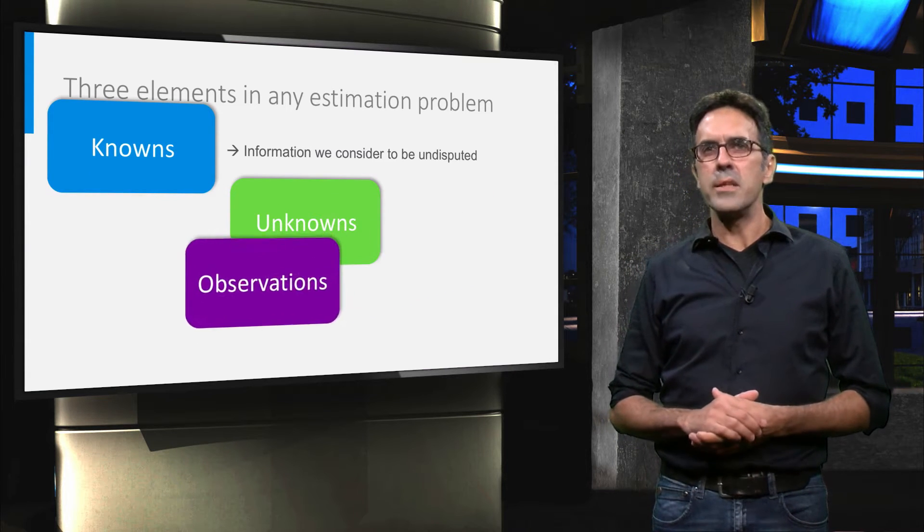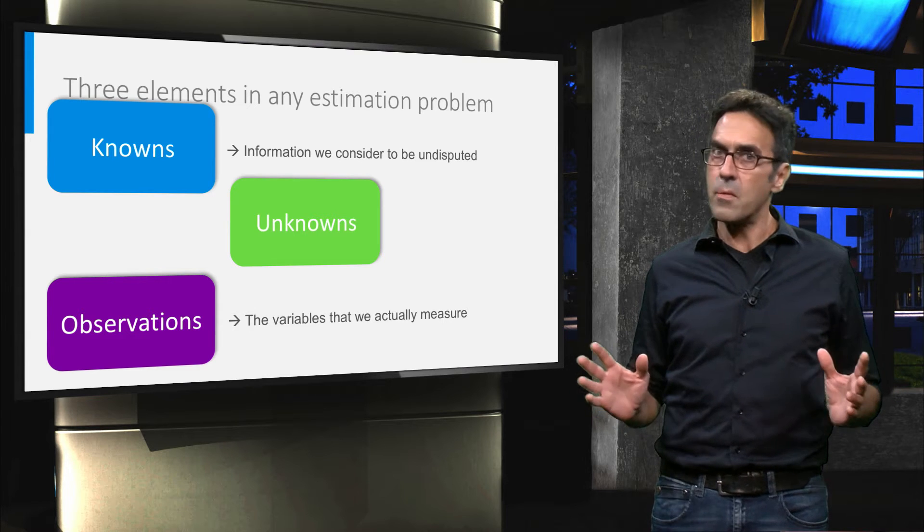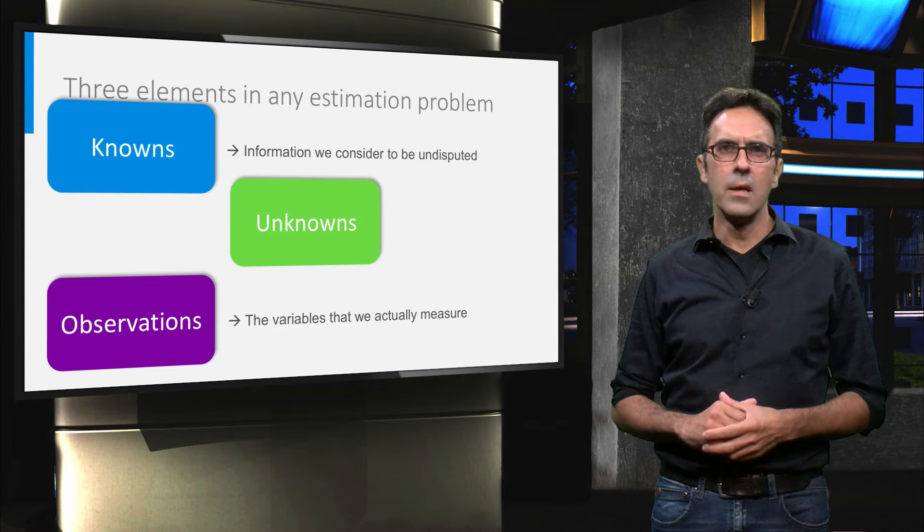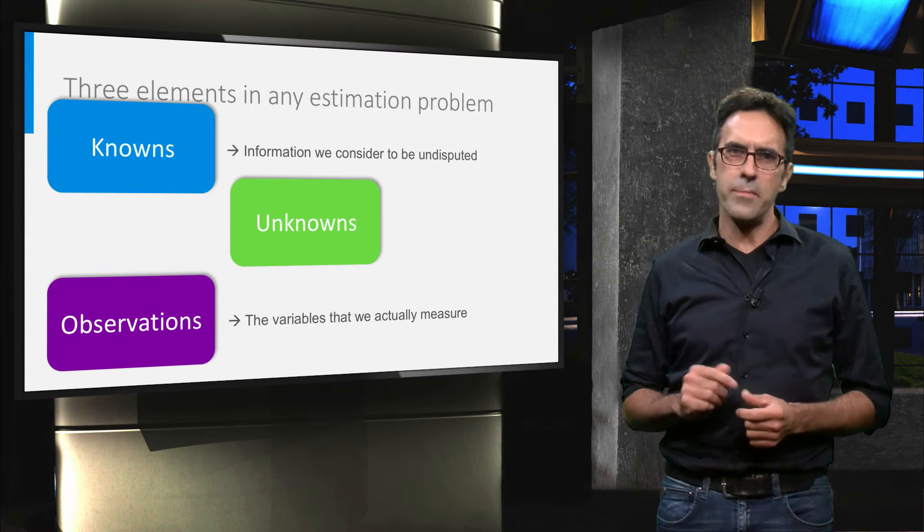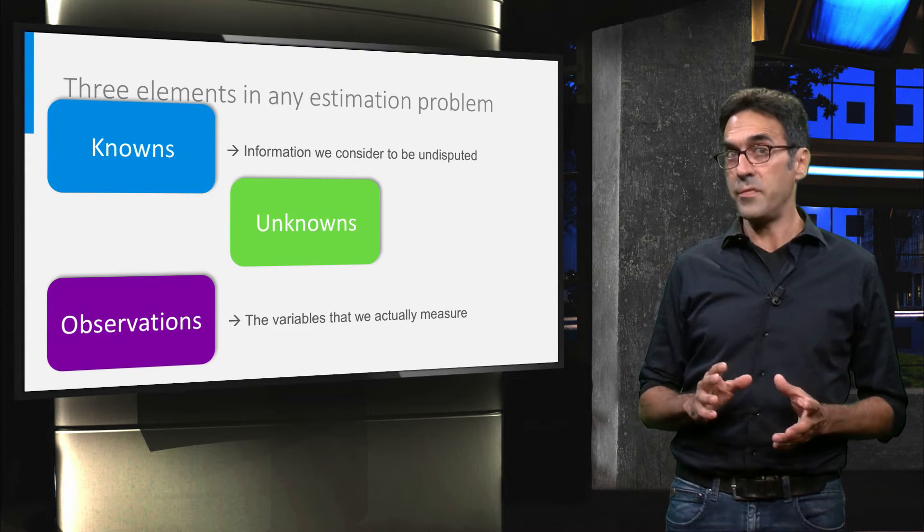The knowns contain the information that we consider to be undisputed. They do not follow from measurements. They are, per definition, deterministic. The observations are the measurements, such as the readings from an instrument. They are, per definition, stochastic.